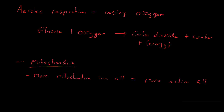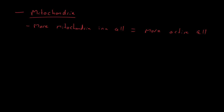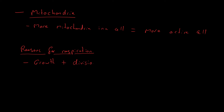The amount of mitochondria tells you about the activity of the cell — whether it's really active, divides a lot, or needs to grow. So that brings us on to why we respire at all. Living cells need to grow and divide. Cell division means producing multiple cells from a single cell, which requires energy.